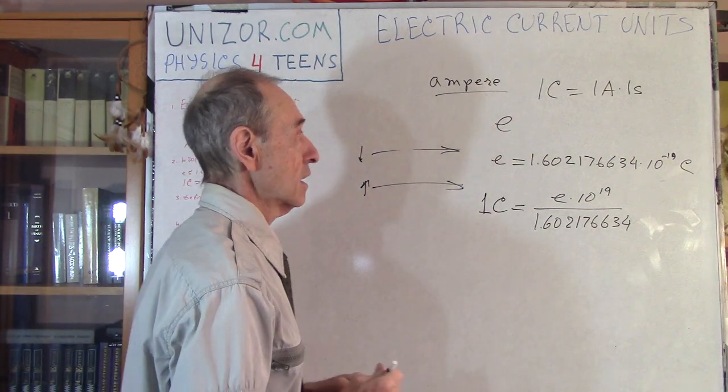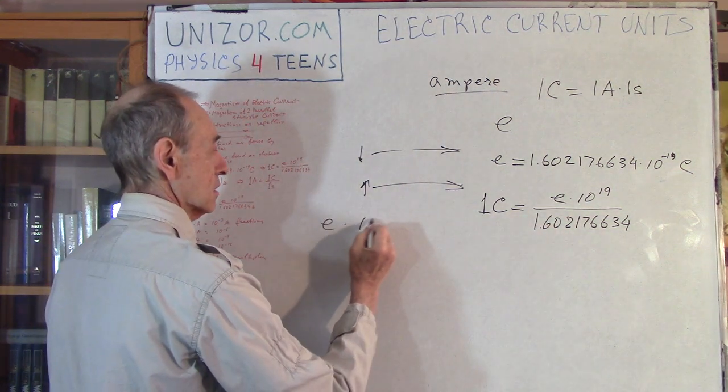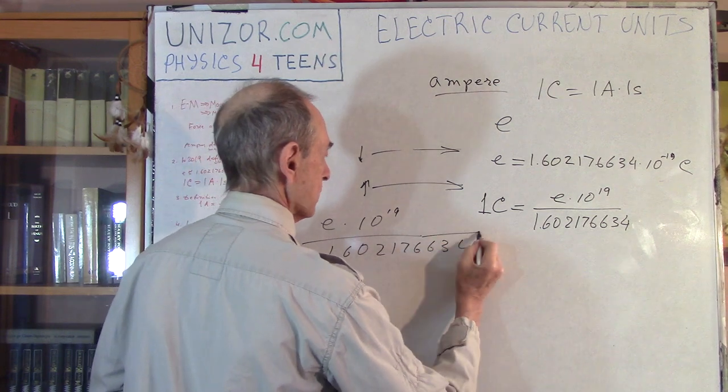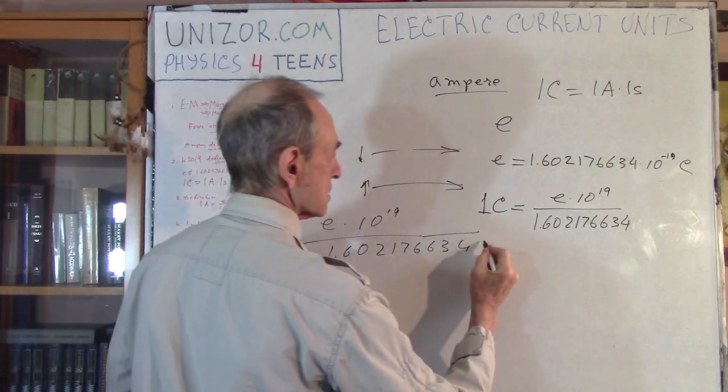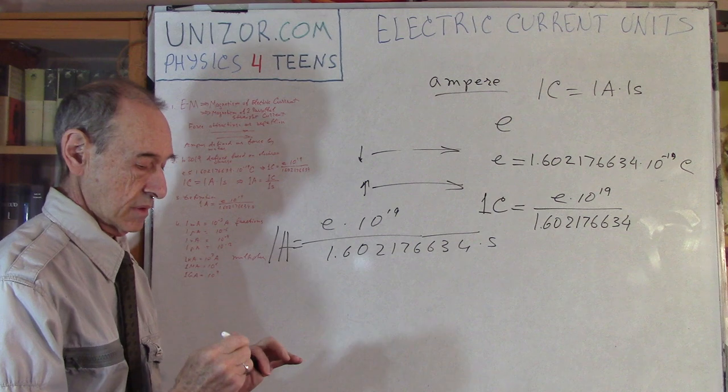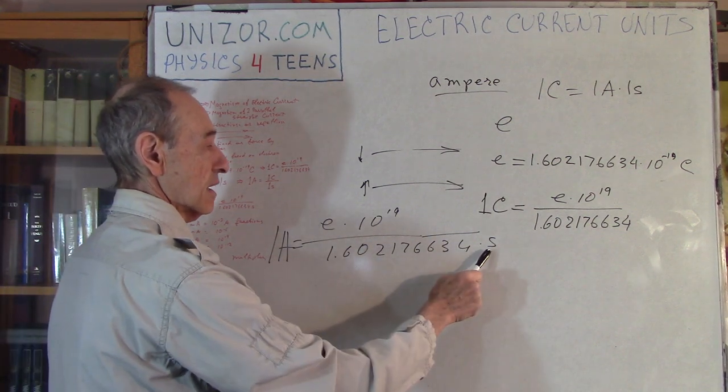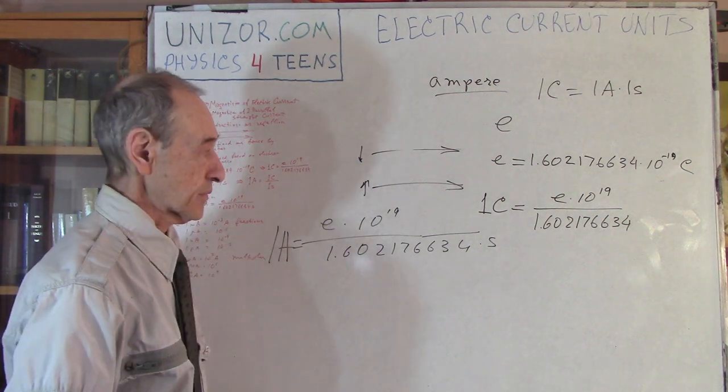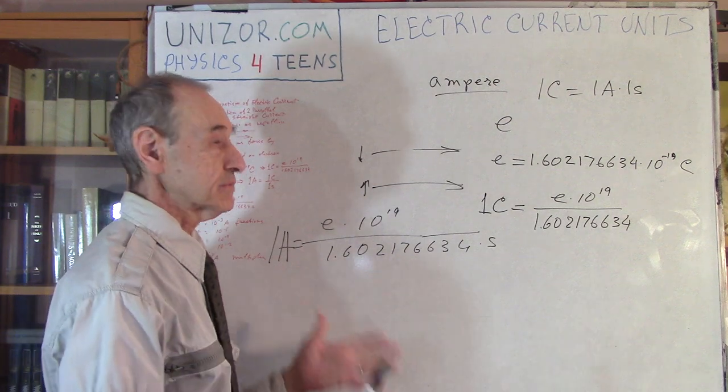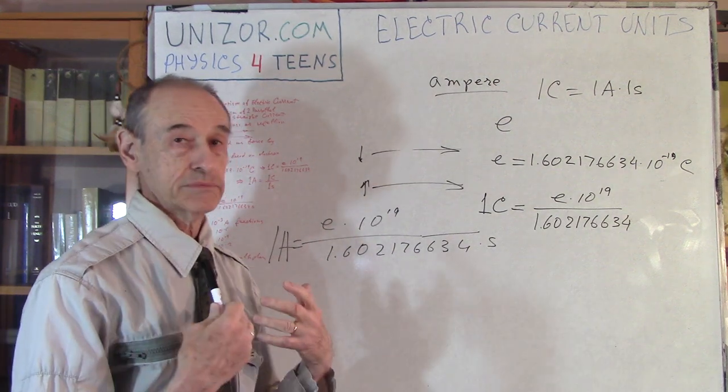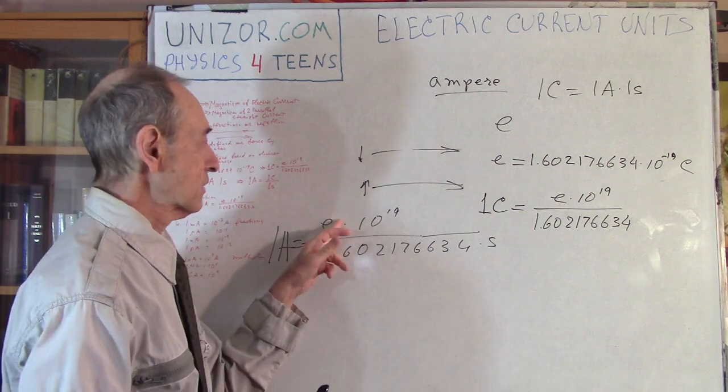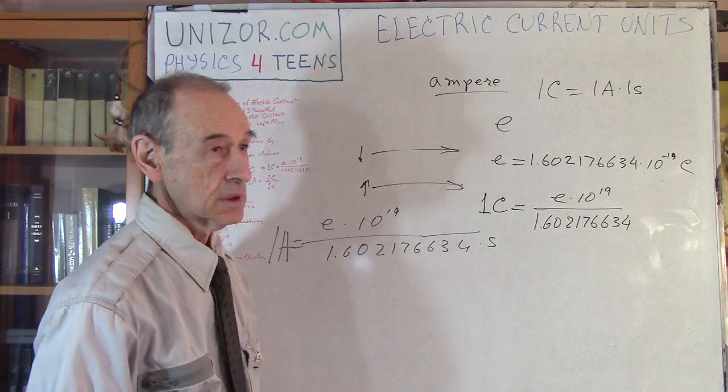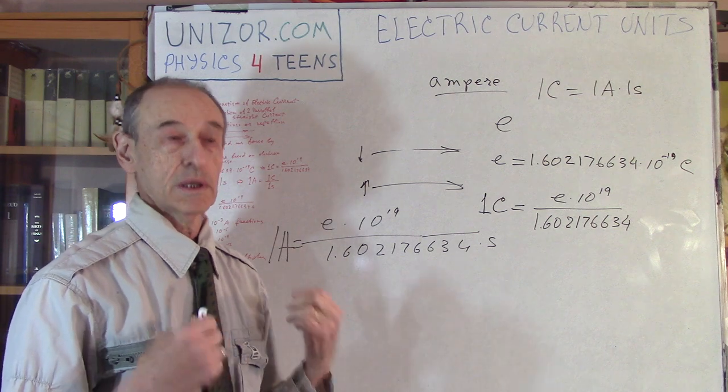And therefore, if this amount of electricity, e times 10 to 19 divided by 1.602176634, if this amount is per second, so that if this amount of electricity is transformed every second, then this is the current, the current of one ampere. So we have defined ampere in the way of using the natural constant. The amount of electricity in the electron multiplied and divided by these numbers. If this is per second, then this is exactly one ampere of electric current, by definition.